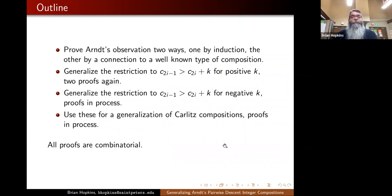So what we'll do in the rest of the talk is prove Arndt's observation two different ways, one by induction and the other by connecting his compositions to another well-known type of compositions. Then we'll generalize the restriction in two ways. First, we'll look at the compositions where the drop is steeper. The c_(2i-1) part has to be greater than the c_(2i) part plus k for some positive value of k. Then looking ahead to future work, we're going to see what happens when we have k as a negative value, which leads to a generalization of Carlitz compositions. And all the proofs of what we've been doing are combinatorial.